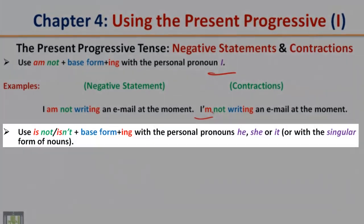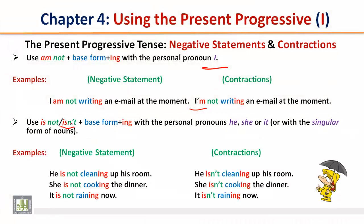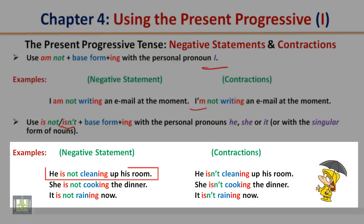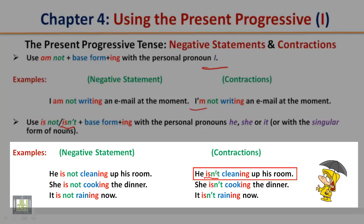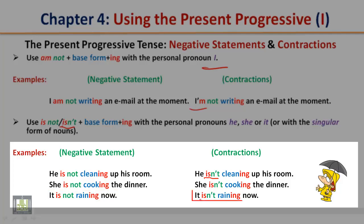Use is not, or the contraction isn't, plus base form plus -ing with the personal pronouns he, she, or it, or with the singular form of nouns. Examples — Negative statement: He is not cleaning up his room. Contraction: He isn't cleaning up his room. Negative statement: She is not cooking the dinner. Contraction: She isn't cooking the dinner. Negative statement: It is not raining now. Contraction: It isn't raining now.